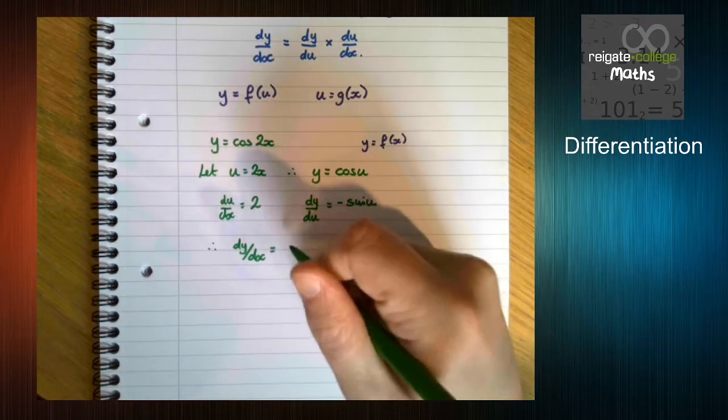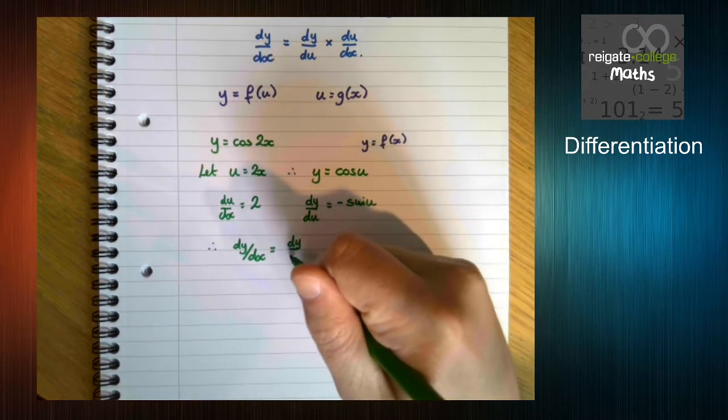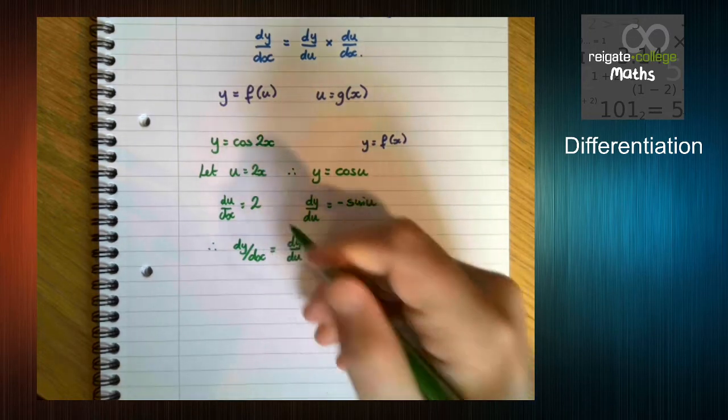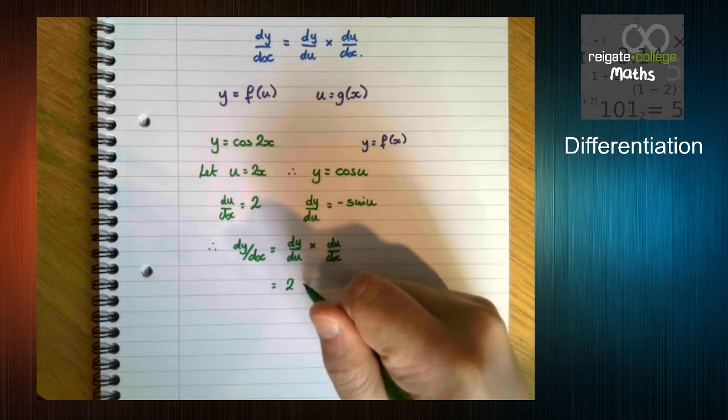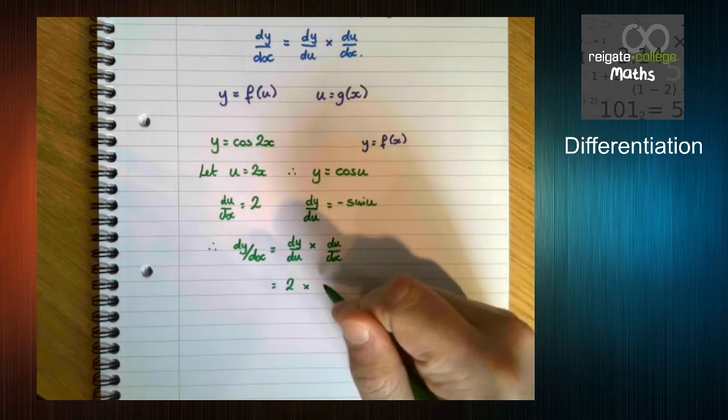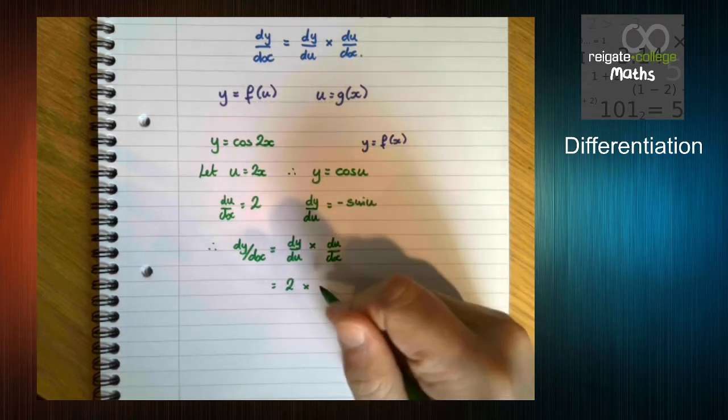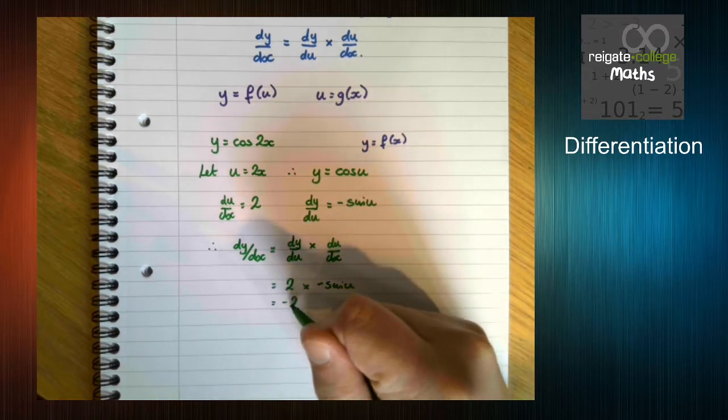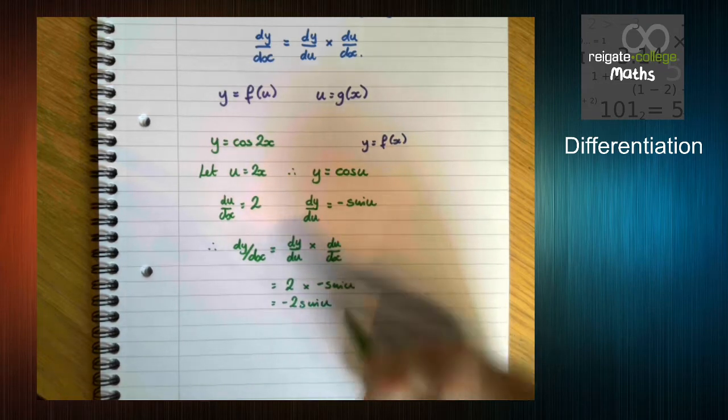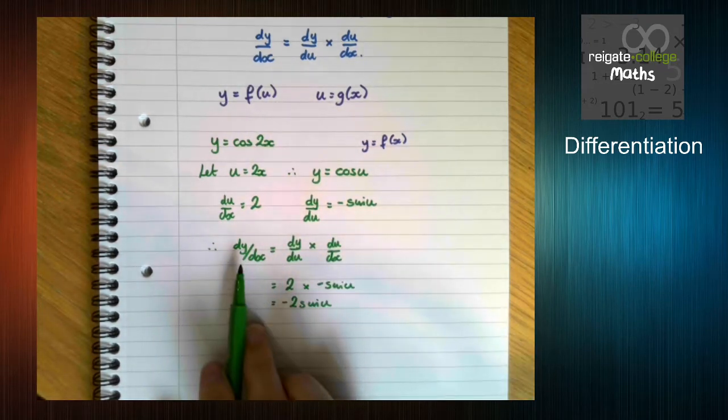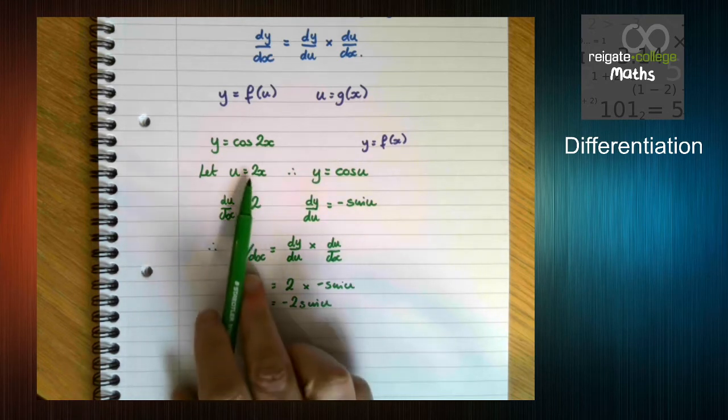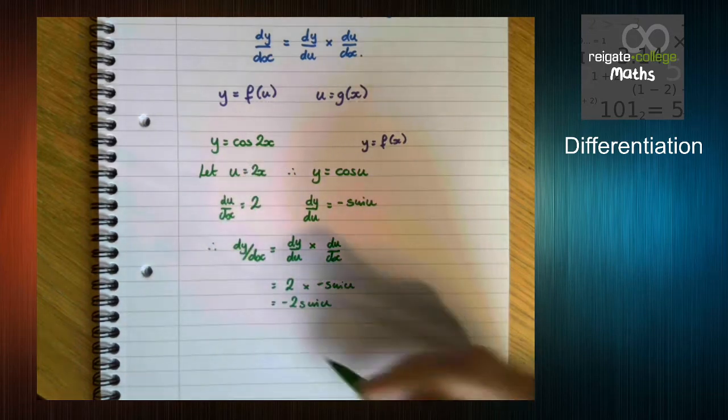So we know that dy/dx is dy/du times du/dx. So we get minus sin u times 2. But notice how this doesn't have any u's in it. We need to remove the u here. And how do we do that? Well, we have our original u function here.